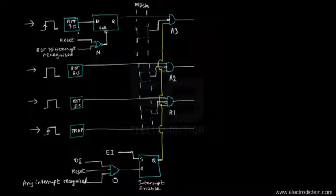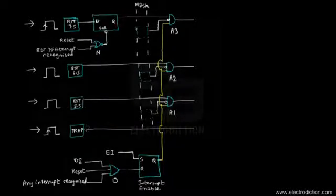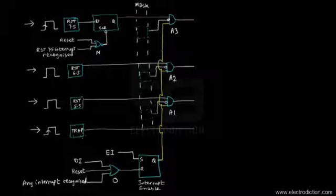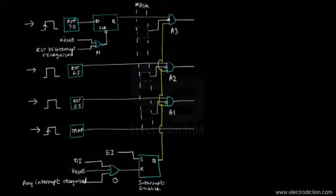For each of the interrupt pins — TRAP, RST 7.5, 6.5, and 5.5 — they each have a particular flip-flop, represented by these boxes in the diagram. These are actually flip-flops, and that's why you'll see either a level trigger or an edge trigger symbol at the left. Whenever there is a particular signal, each of these flip-flops for the corresponding interrupt pins gets set to logic one voltage level, which is held and then sent on to a particular logic circuit.